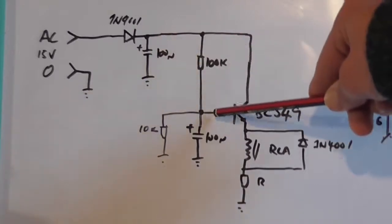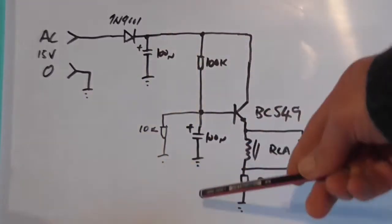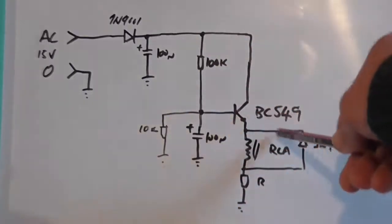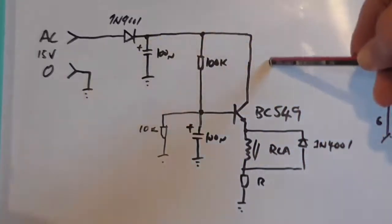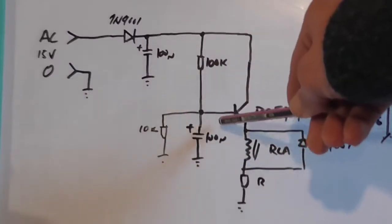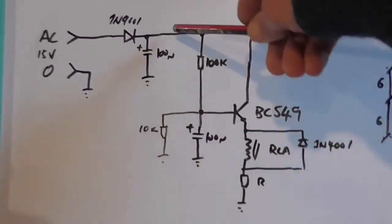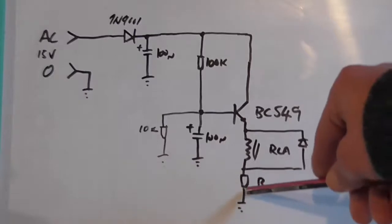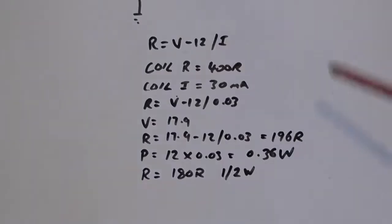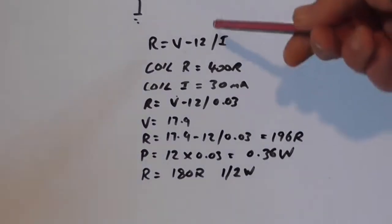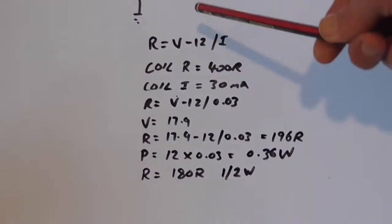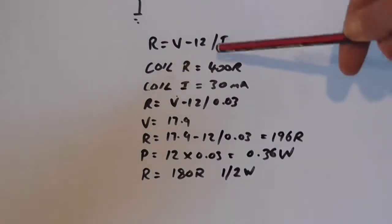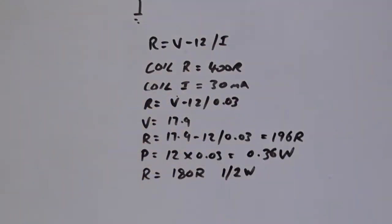We then go through this 100k resistor and this 100 microfarad, again, 63 volt capacitor. This is our RC delay, which provides a delay at the base of this BC549, and the collector, once this reaches more than 0.6 of a volt, this transistor will turn on, allowing current to flow from the collector through to the emitter, through the relay coil, through this R to Earth.